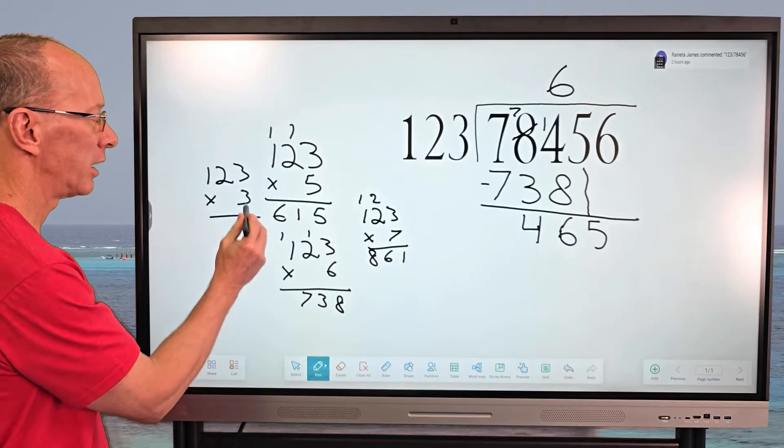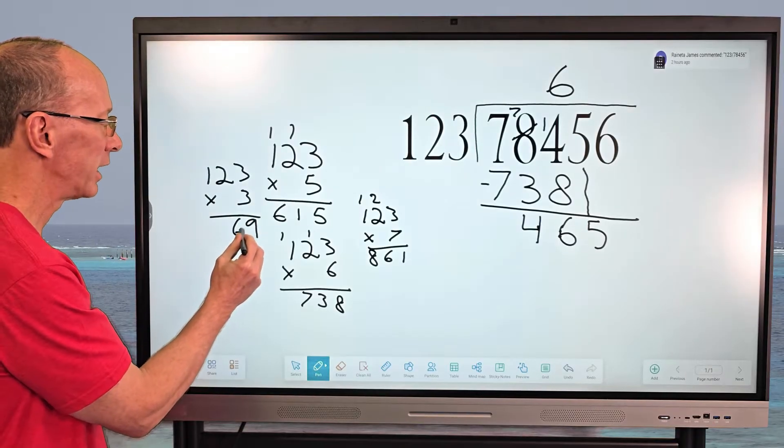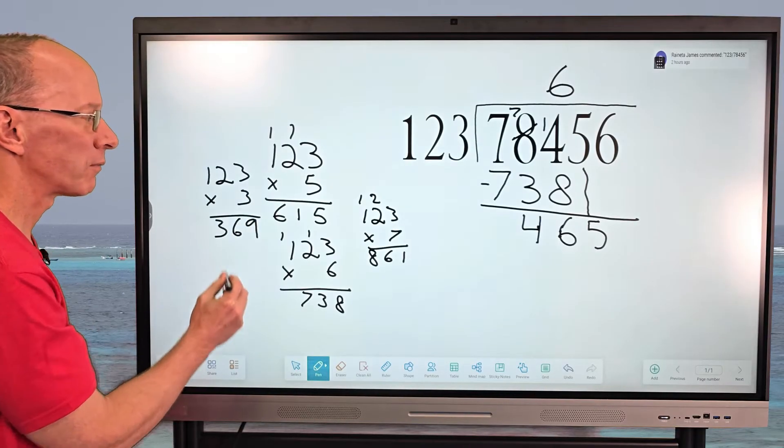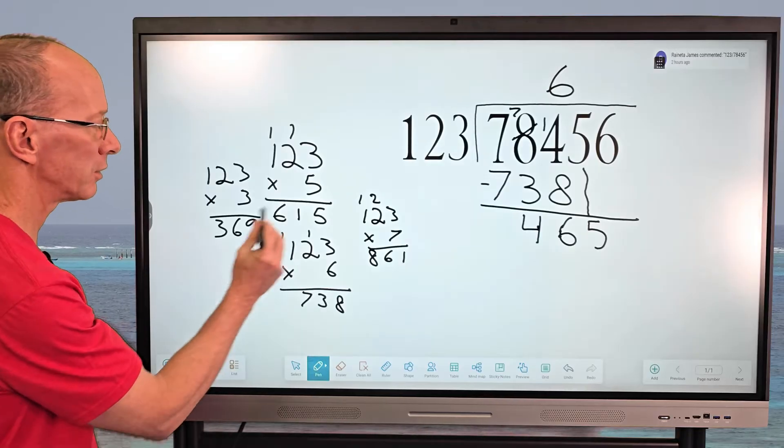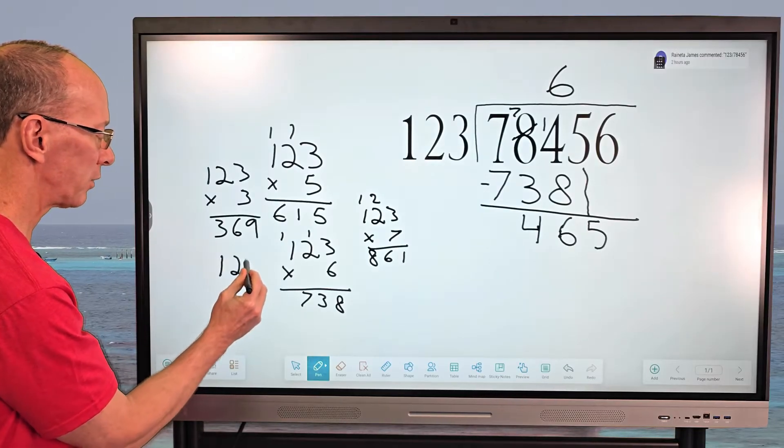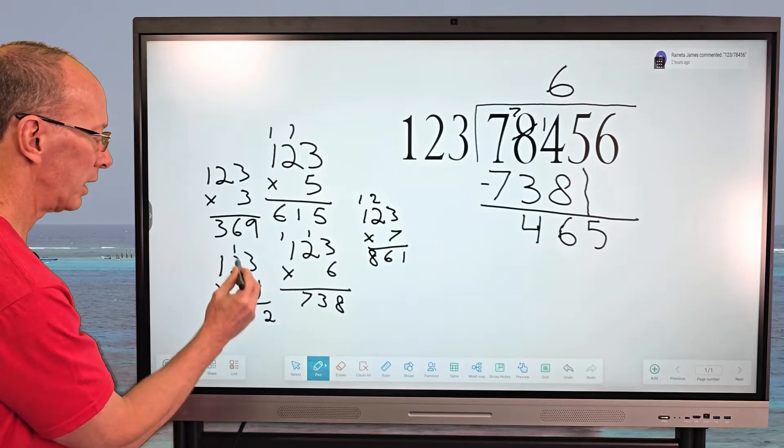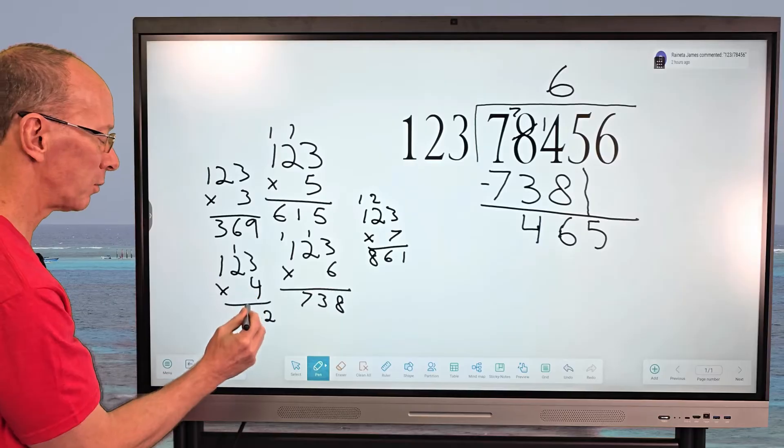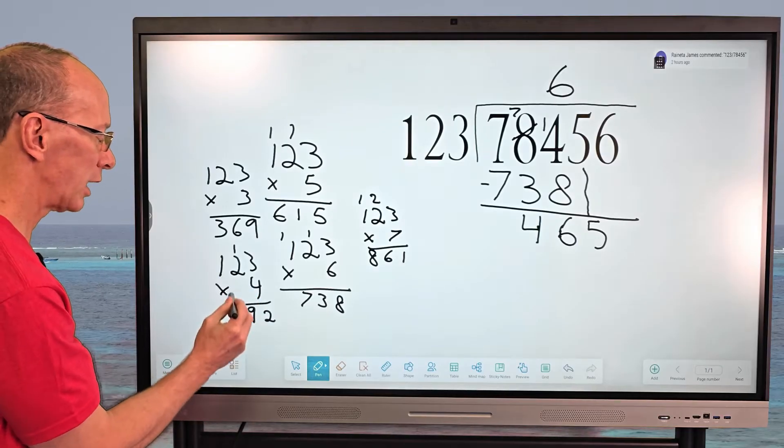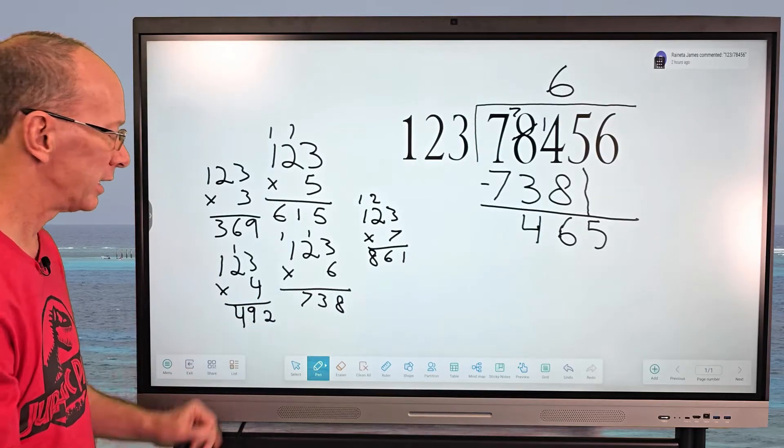So let's try 123 times three. So three times three is nine. Three times two is six. And then three times one is three. And just to show you what four looks like, 123 times four. So four times three is 12. And then four times two is eight plus the one is nine. And then four times one is four. So that is too big.